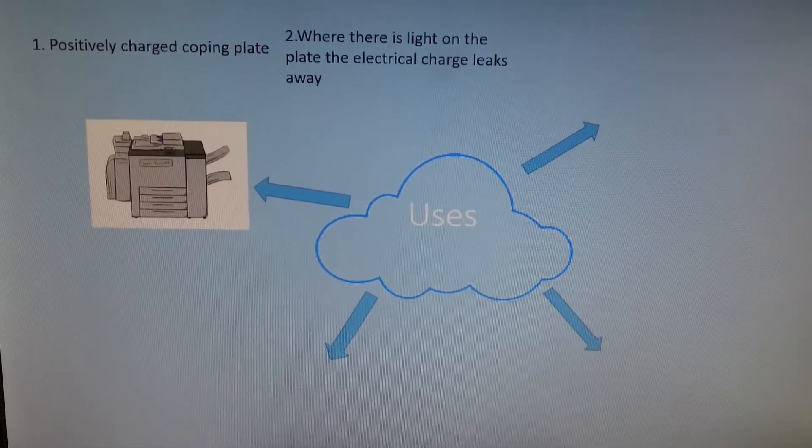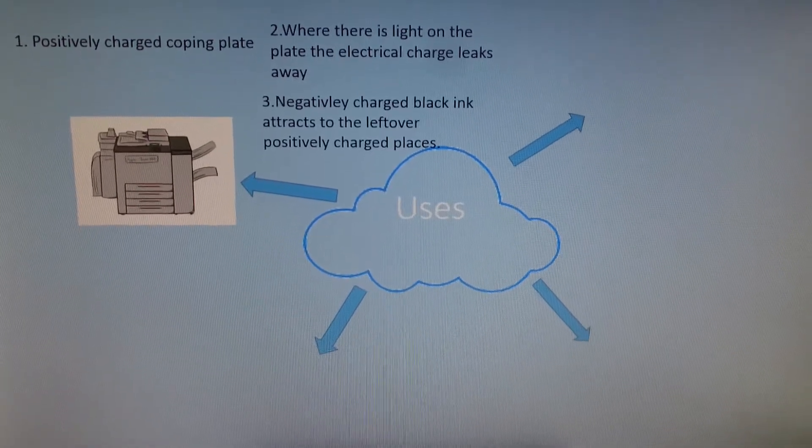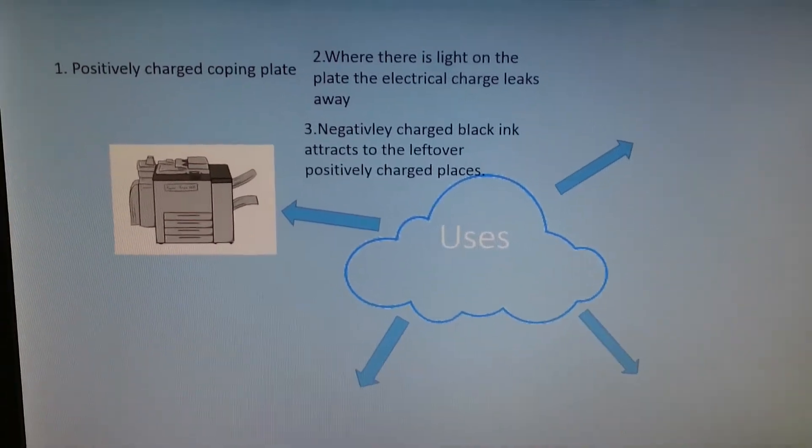Positively charged copying plate. Where there is light on the plate, the electrical charge leaks away. Negatively charged black ink attracts to the leftover positively charged places.